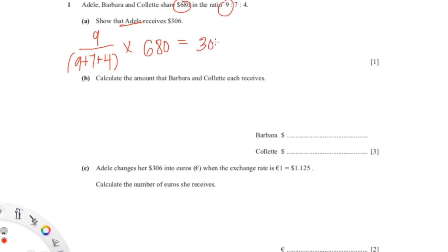a value of 306. So this second question is asking about Barbara's share, and you can do the same thing you did with Adele. So Barbara will be 7 over (9+7+4) times 680. When you plug this into your calculator, you will get a value of 238, so Barbara gets 238.